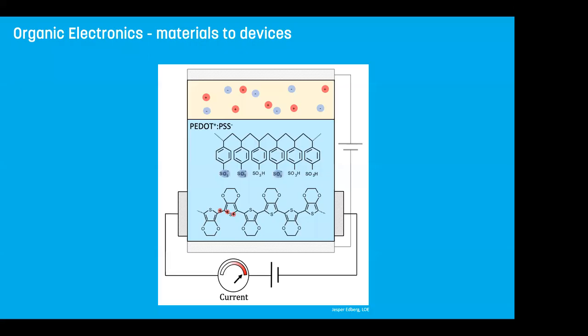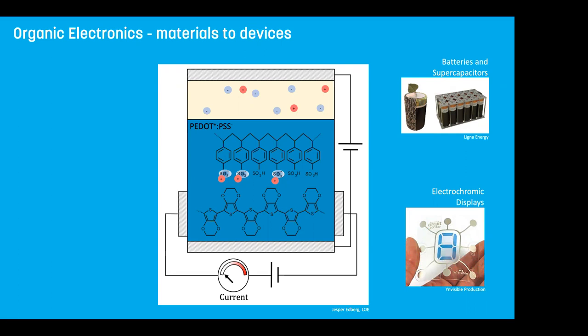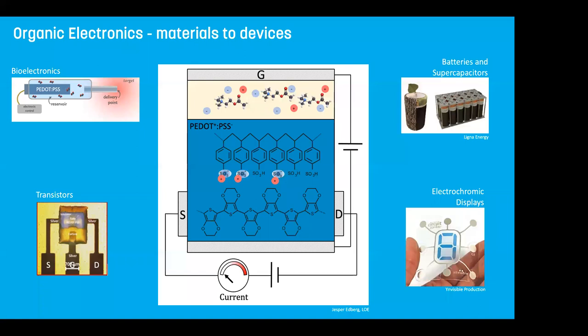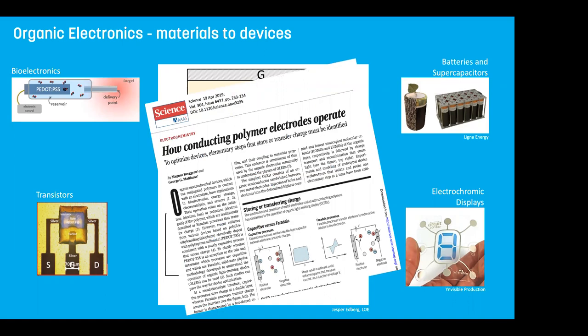We can also use the change of energetics to make display cells that we can print. And by utilizing the modulation of charge carriers, we can make printed transistors. If you put charged compounds in the electrolyte, we can generate a potential difference along the electrolyte, and from this we can derive organic electronic ion pumps for drug delivery. The operation of this pseudo-capacitor has been debated for at least 20 years. We have tried to gather information and our own results to distinguish between capacitive processes and Faradaic processes, and this was published a little more than a year ago.